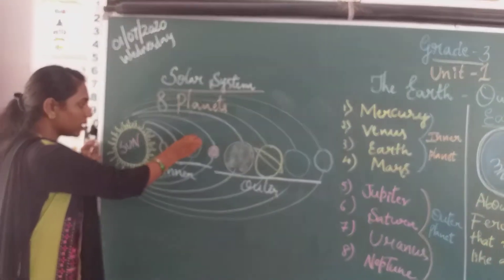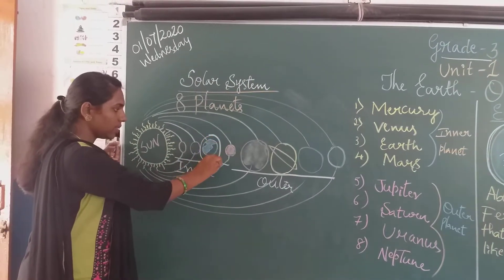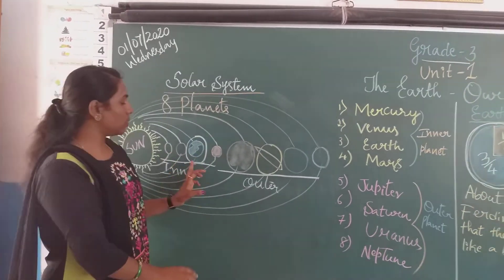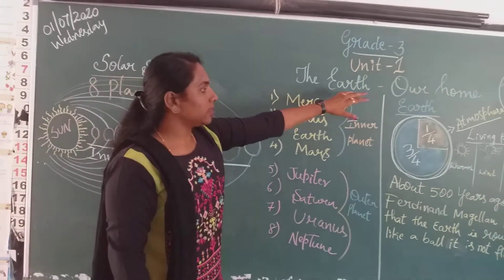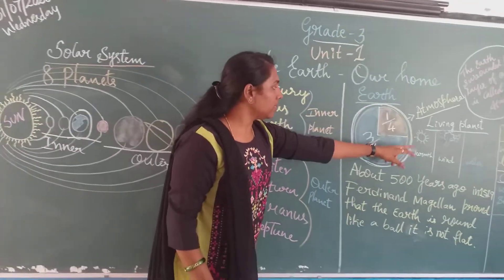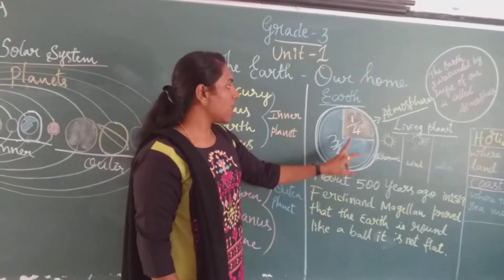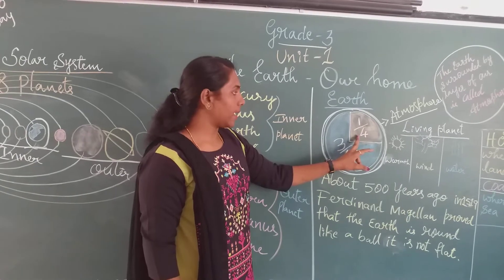Here we have the earth. Earth is the third planet of the solar system. This earth is covered by three-fourths of water and one-fourth of land.